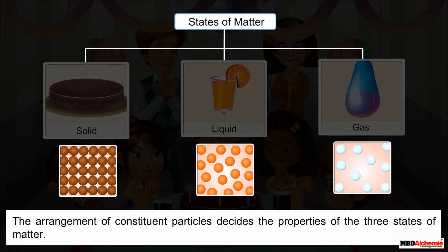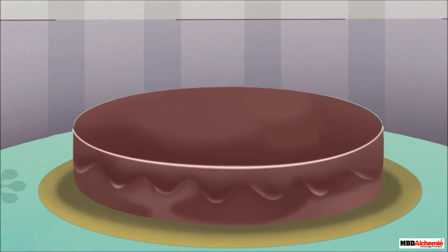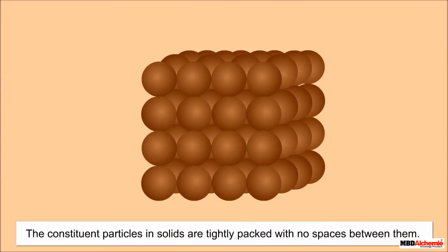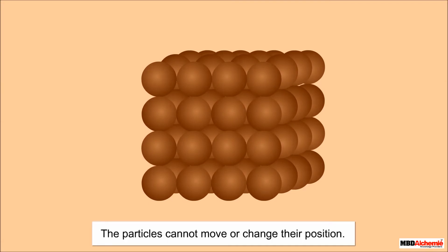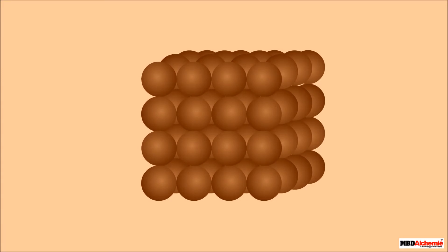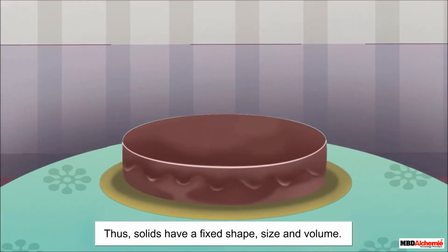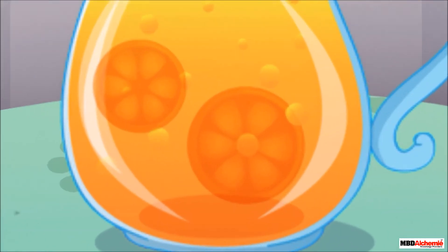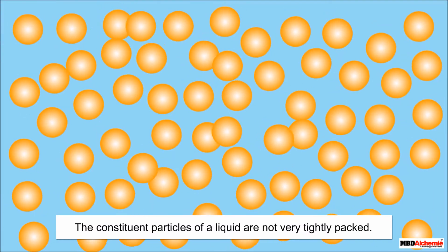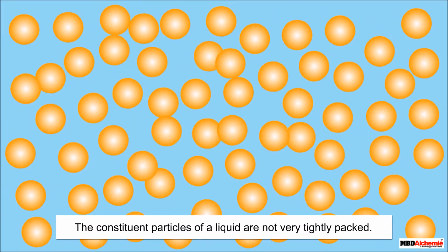In solids, the particles are very closely packed with almost no space between them. As a result, these particles cannot move or change their position. This arrangement of particles is responsible for the fixed shape, size, and volume of solids.